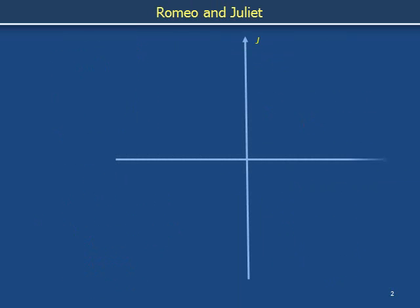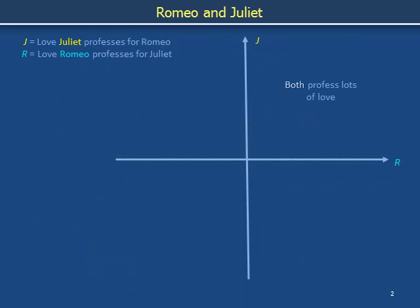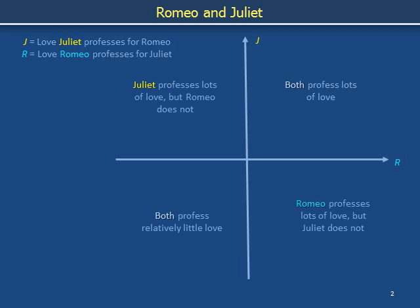We begin with Romeo and Juliet. J is the love that Juliet professes for Romeo, and R is the love Romeo professes for Juliet. When both J and R are positive, Juliet and Romeo both profess love. When J and R are both negative, Juliet and Romeo both profess hate. When J is positive and R is negative, Juliet expresses unrequited love and Romeo expresses hate, and Romeo and Juliet exchange roles when instead J is negative and R is positive.